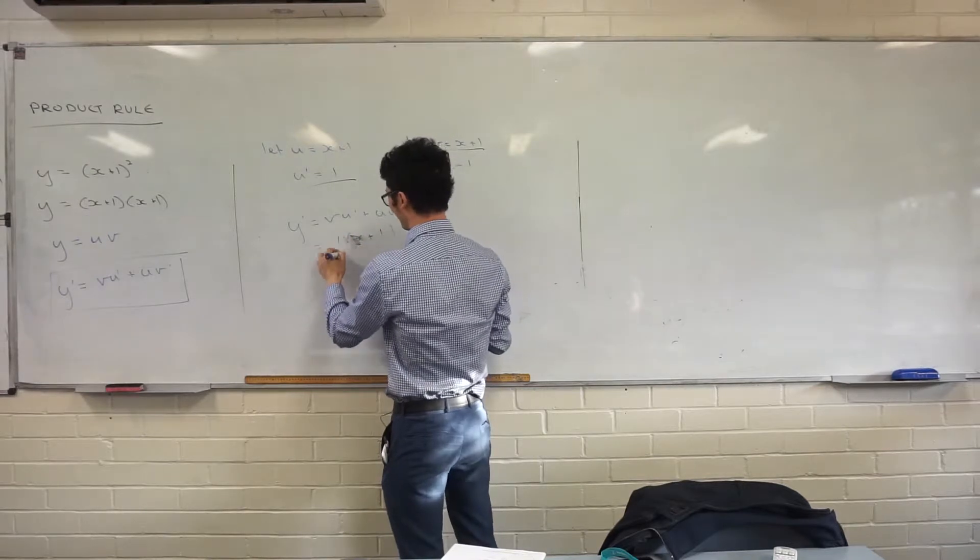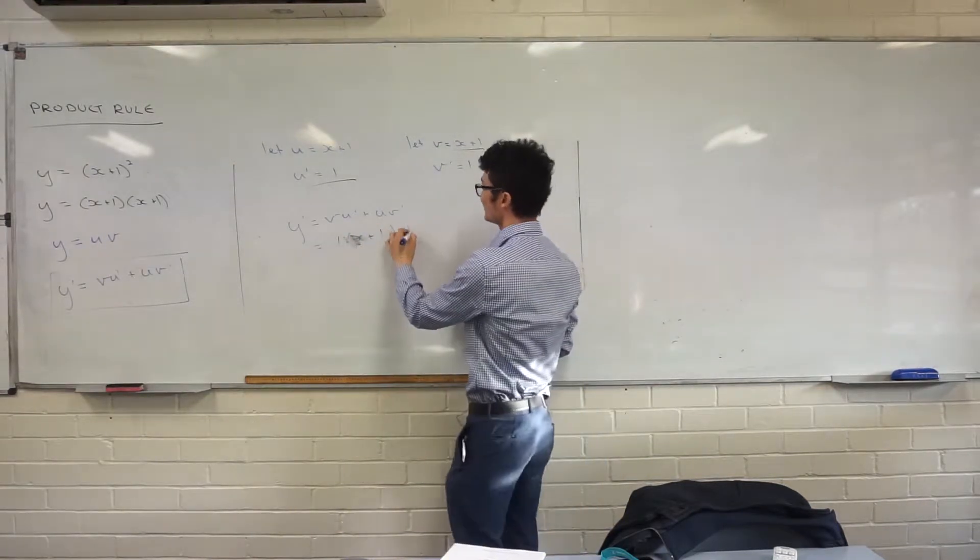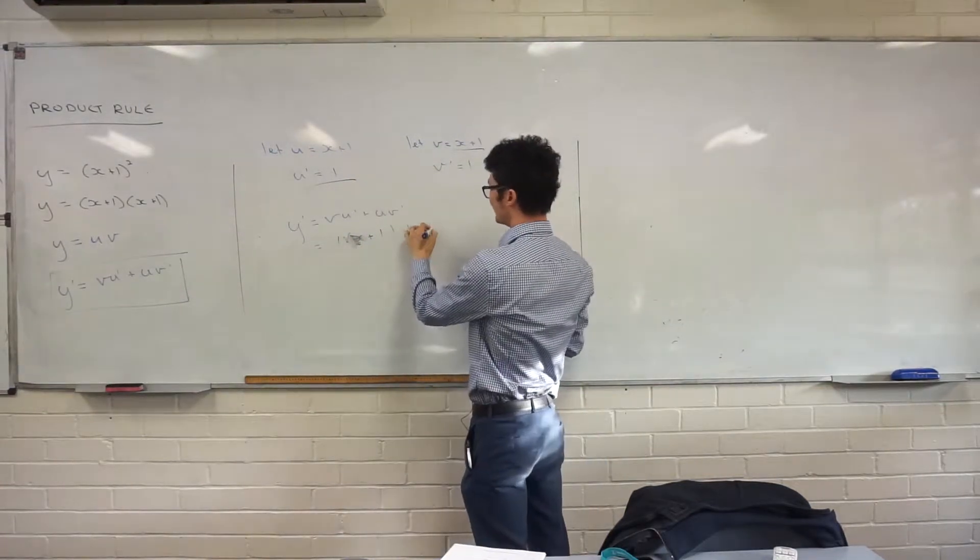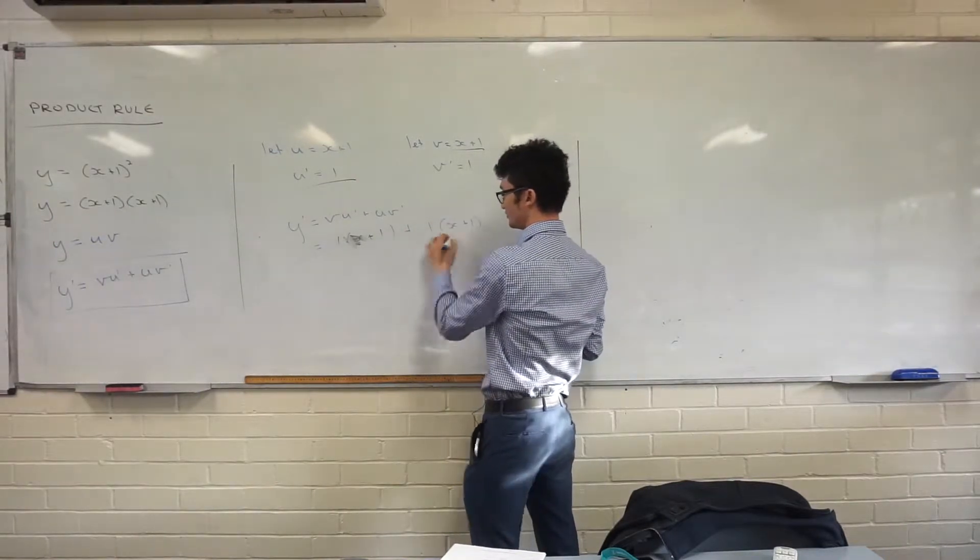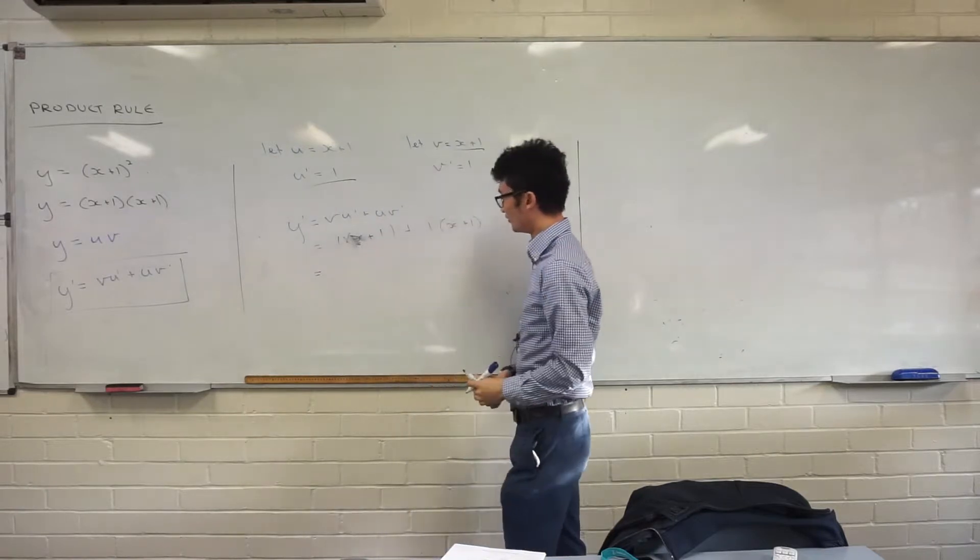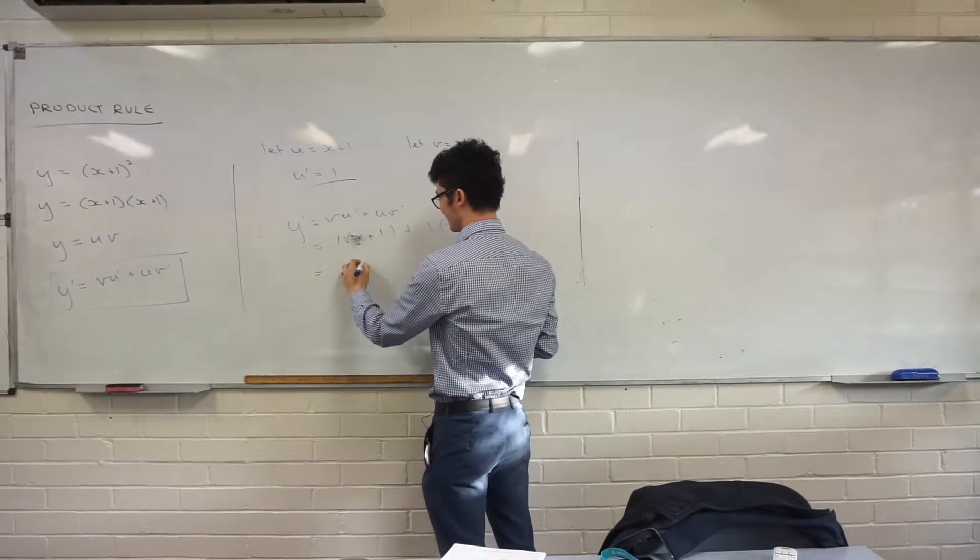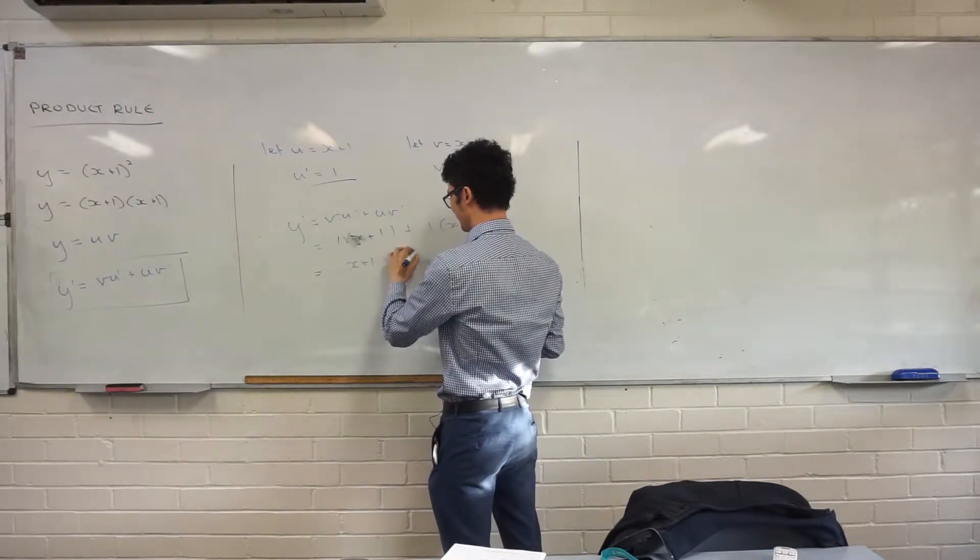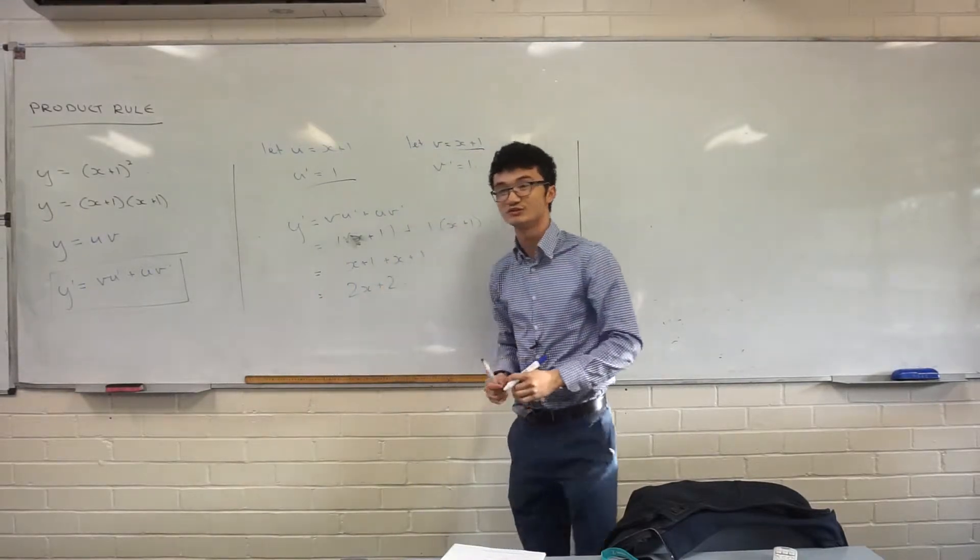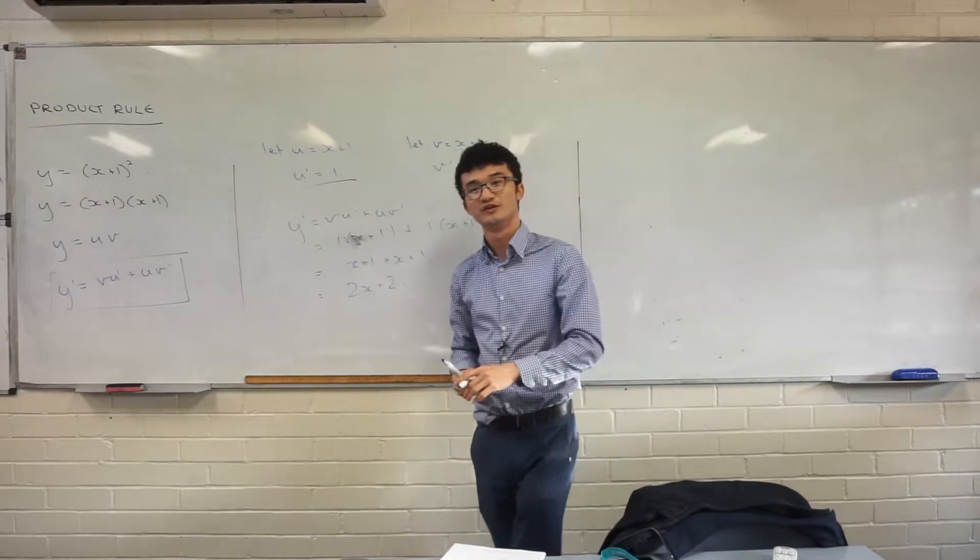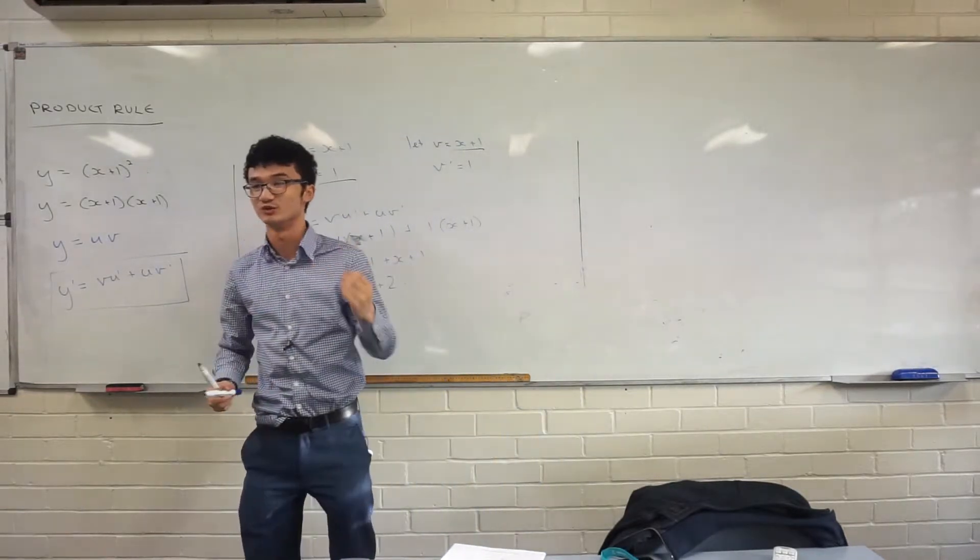I'm actually going to literally write, okay, we're multiplying that by 1. And uv dash, I'm doing x plus 1 times 1 as well. And lo and behold, if you expand this all out, what do we get? 2x plus 2. Yeah, 2x plus 2, which is what we got before. So we know that this product rule is something which can work for us.